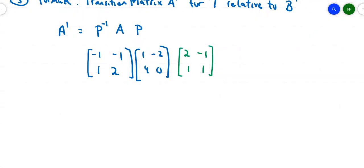Working from left to right, let's multiply the blue matrices first. That'll give me a 2 by 2: -1 times 1 is -1, minus 4 is -5. Positive 2 plus 0 is 2. 1 plus 8 is 9, and then -2 is my fourth entry.